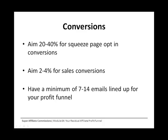Conversion rates are an important factor which governs the profit of your affiliate profit funnel. An average affiliate would normally have a conversion rate of 0.5 to 1%. However, as a super affiliate, for your squeeze page lead capture campaigns, you would want to have a conversion between 20 to 40%. This means that for every 100 visitors that visit your squeeze page, you would want 20 to 40 of them to opt into your autoresponder.